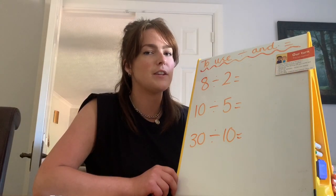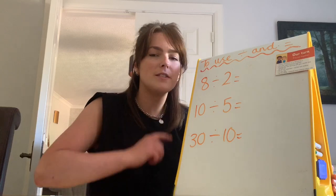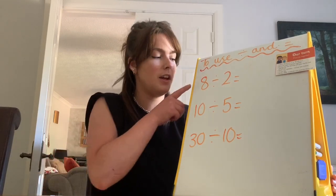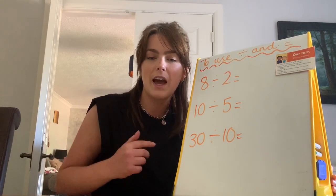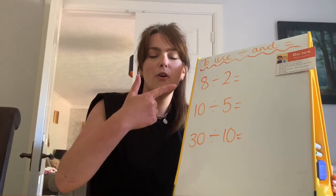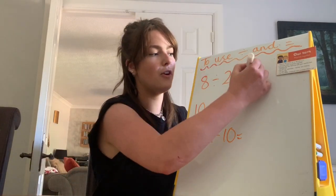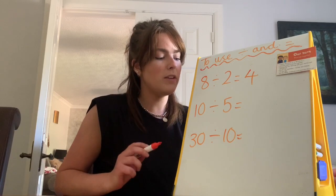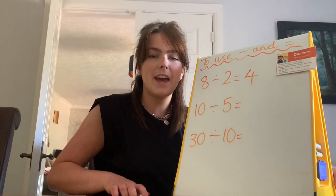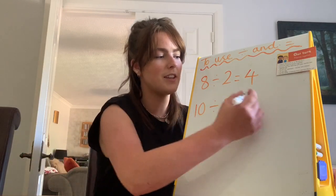Let's have another practice. Remember, if you're finding it a bit tricky and you want to carry on drawing the circles, that's fine. For this first one — 8 divided by 2 — we're going to count in twos until we get to the number 8. How many fingers we have is our answer. Let's count: 2, 4, 6, 8. I've got four fingers, so the answer is 4. Let's have a look at the next one — 10 divided by 5. I'm going to count in fives until I get to 10. 5, 10. How many fingers have I got? 2. So the answer is 2.